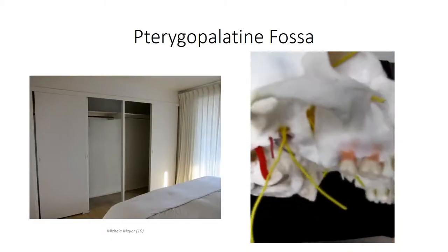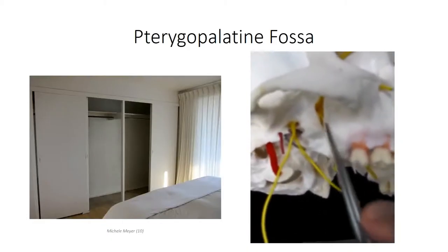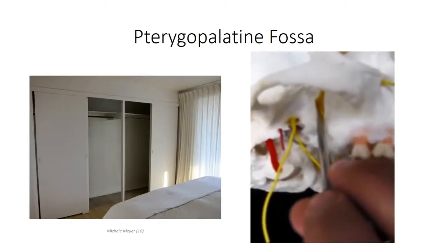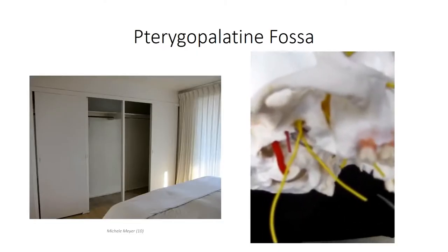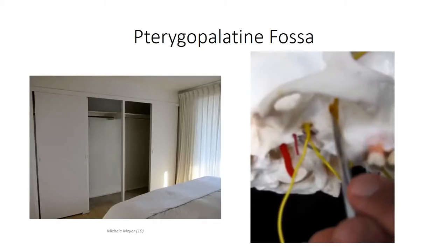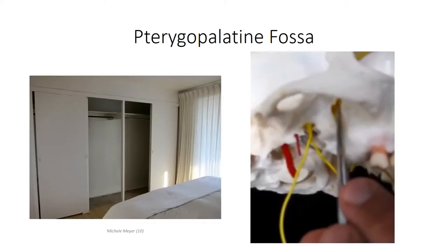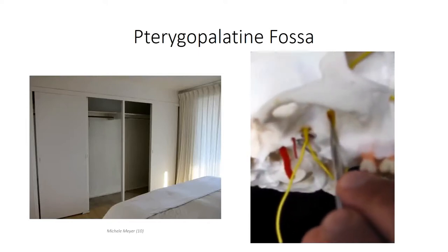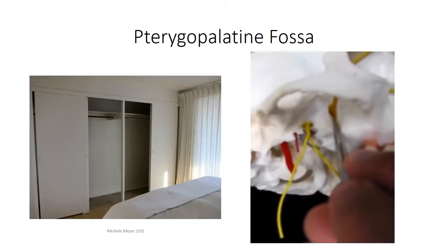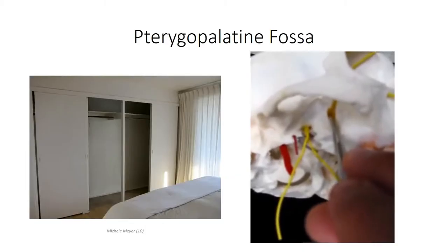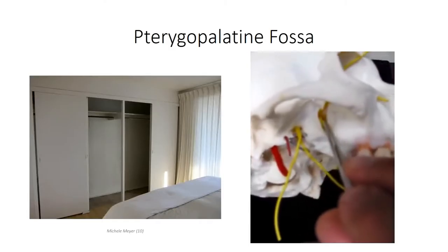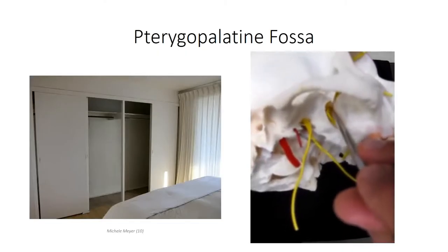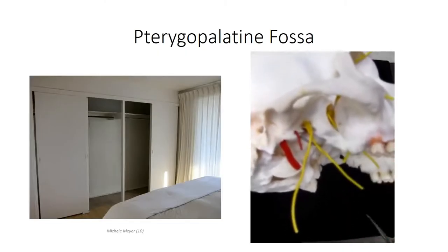Opposite the anterior wall, the posterior wall is made up of the pterygoid processes and greater wing of the sphenoid bone. Two important foramen allow for communication between the pterygopalatine fossa and the cranial cavity. One is the foramen rotundum, which encases the maxillary branch of the trigeminal nerve. Inferior to this is the much smaller pterygoid canal, still often referred to by its previous name, the vidian canal. This channel carries sympathetic and parasympathetic fibers that supply the nasal cavity, roof of the mouth, and some contents within the orbit.